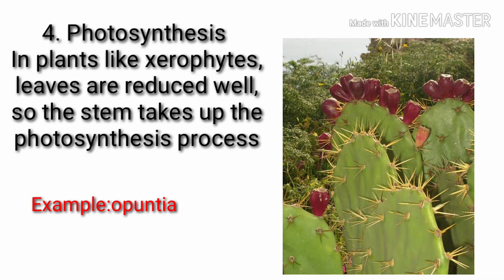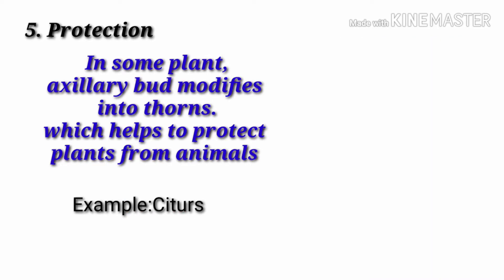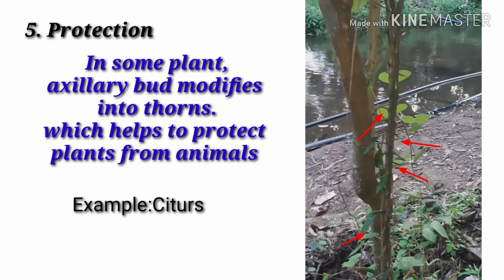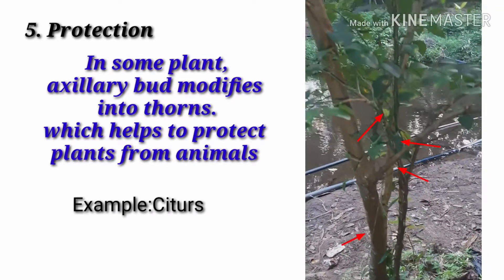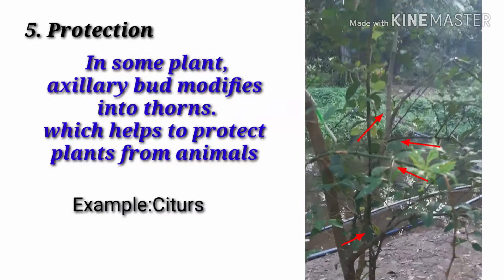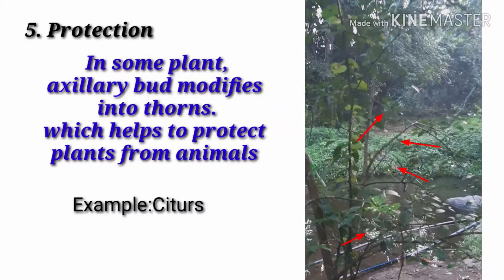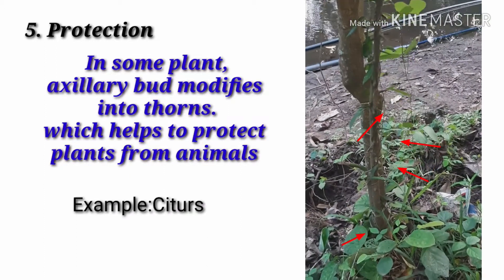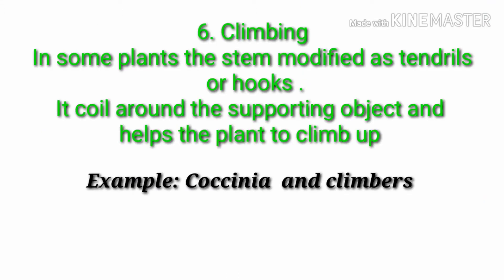As you can notice in the picture, the broad green leaf-like structure is a modified stem called a phylloclade, which carries out photosynthesis. The next secondary function is protection — in some plants, the axillary bud is modified into thorns, which help to protect the plant from herbivores. An example is citrus plants, where the red markings show the presence of thorns.